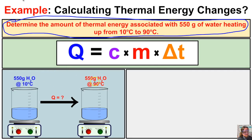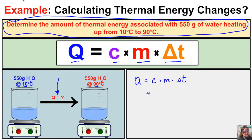We still have 550 grams of water, but its temperature has increased since we turned on the hot plate. We want to know how much thermal energy — how much Q — this water must absorb to raise its temperature from 10 to 90 degrees Celsius. We can use the thermal energy equation: Q equals the specific heat capacity times the mass times the change in temperature.